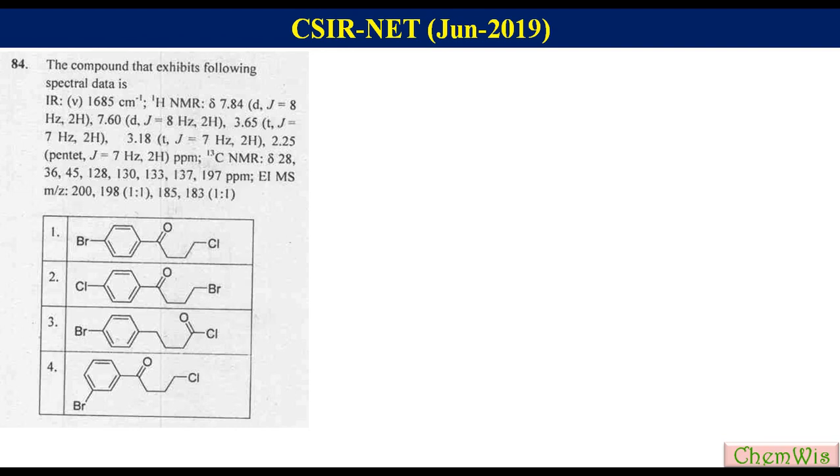Presence of two doublets for two proton each in the aromatic region in the proton NMR suggests 1,4 di-substituted benzene ring. So we can rule out option number 4 which has 1,3 substitution pattern.